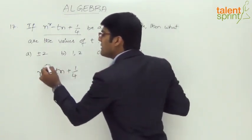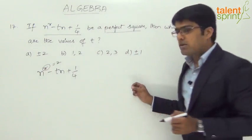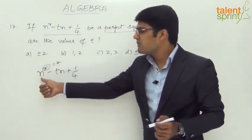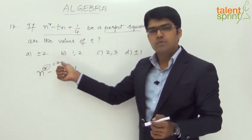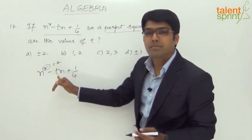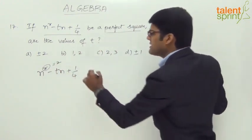If you look at the given expression n^r minus tn plus 1/4, it is obvious that r should be equal to 2, because if this expression should be in the form of (a minus b) whole square, the first term will be a square. So r has to be 2. However, we need to find out the value of t.